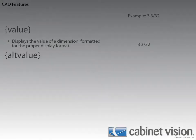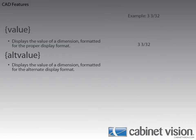Next, we have the ALT value variable. This will display the value of a dimension formatted for the alternate display format. For our example, this means that ALT value will display 78, because the alternate display format is metric and 3 and 3/32nds in metric is 78 millimeters.